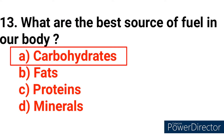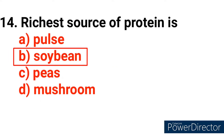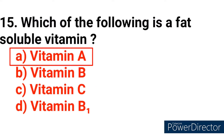Question number 13: What is the best source of energy in our body? Answer option A — carbohydrates. Question number 14: The richest source of protein is? Answer option B — soybean.